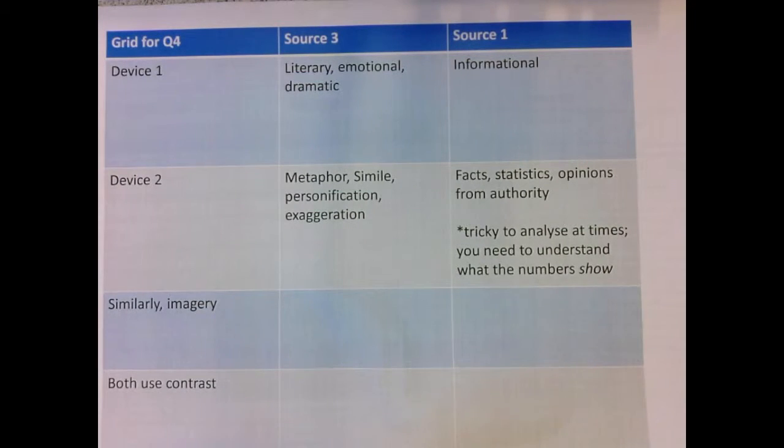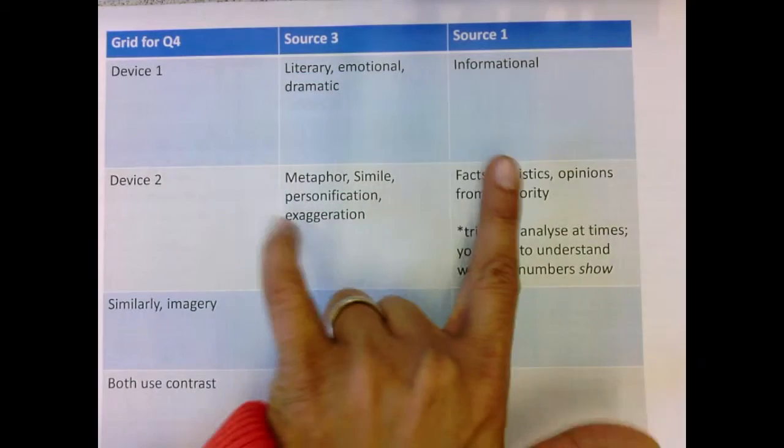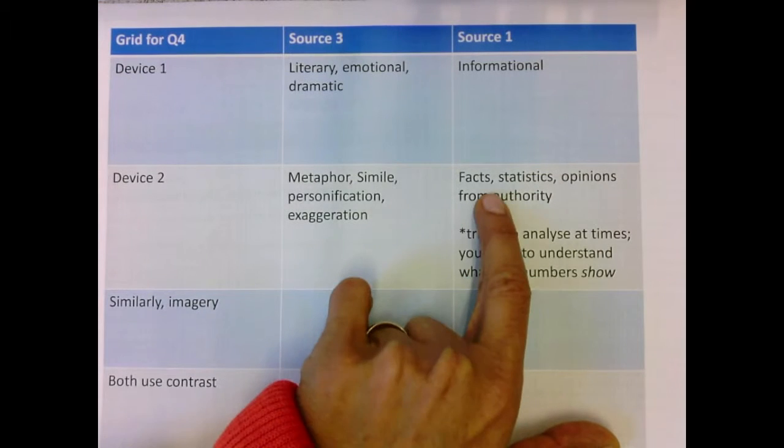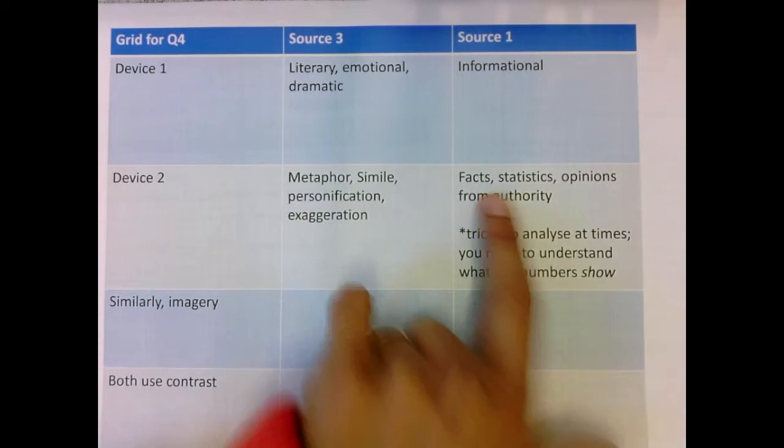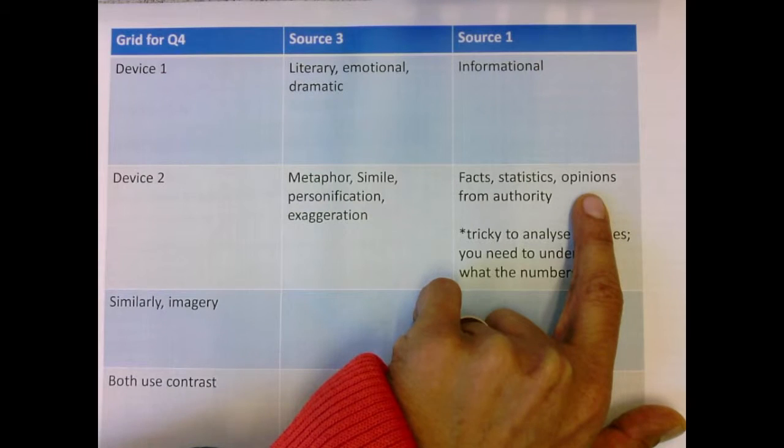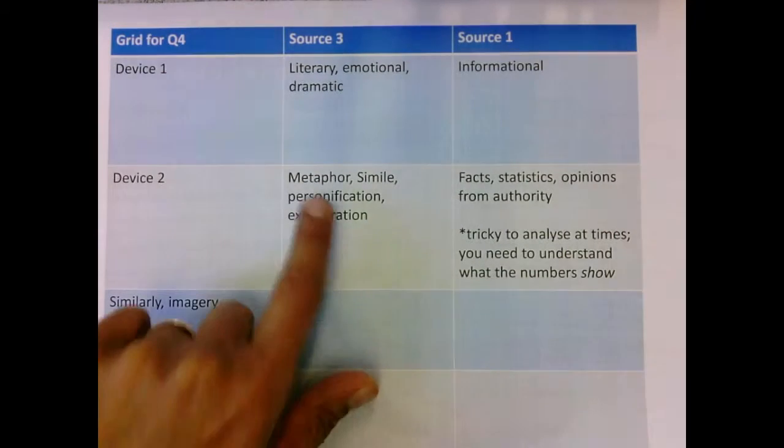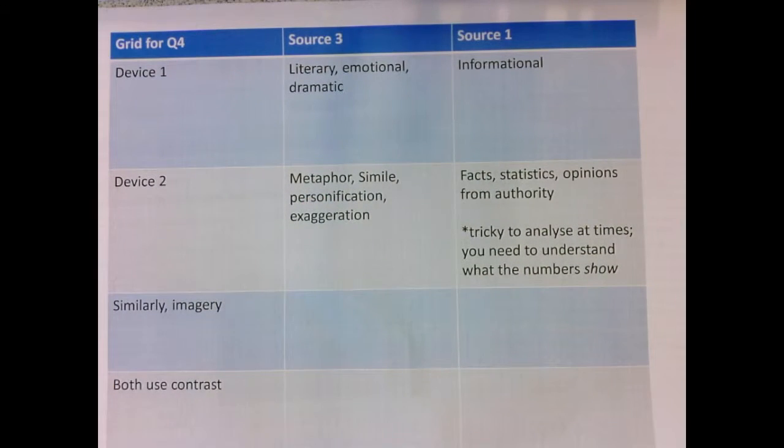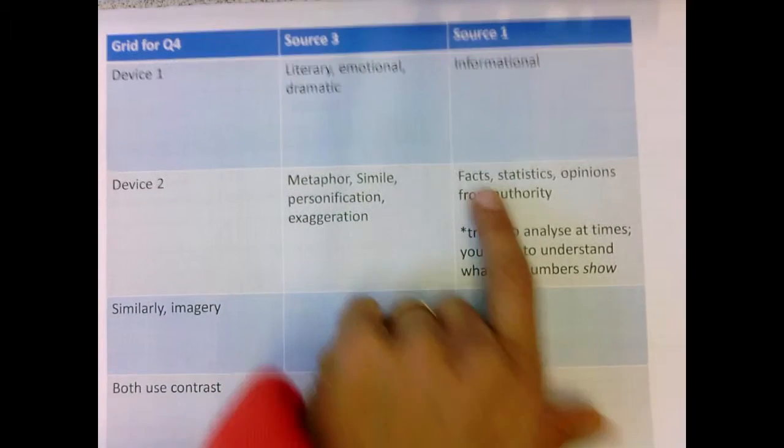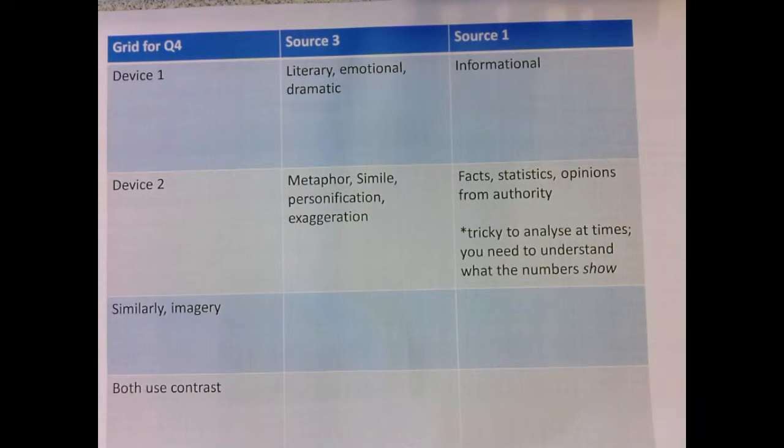The tricky part I have found with students is they can identify these, but it's difficult to analyze a fact, a statistic. So maybe you might want to also think about opinions from authority. But when you're analyzing these things, ironically, these things are much easier to analyze. You zoom into a word, you take the implication, and you link it back to the meaning. Here, to analyze a fact, what is it that the writer wants to say when they give you a fact, you really have to show understanding of the issue at hand. And this may present you with some difficulty.